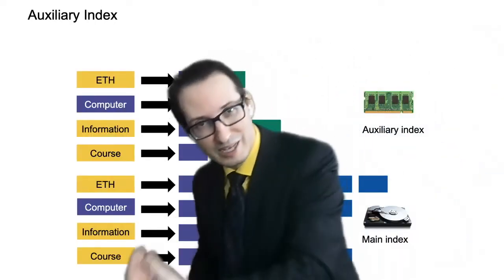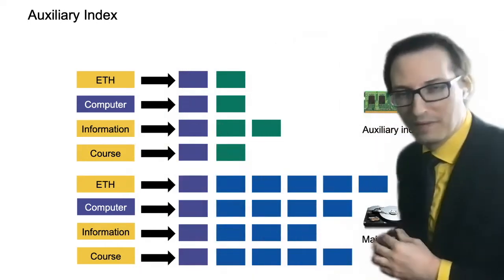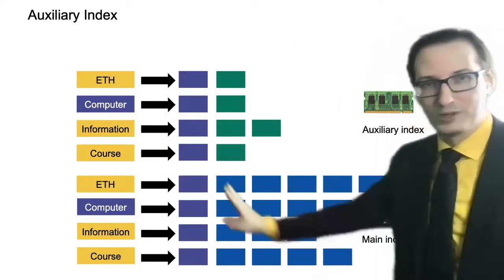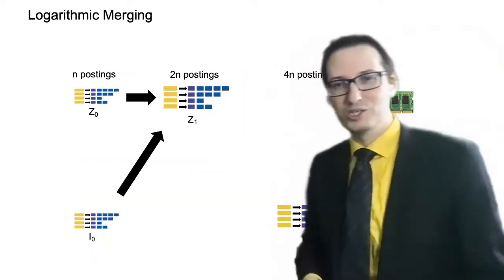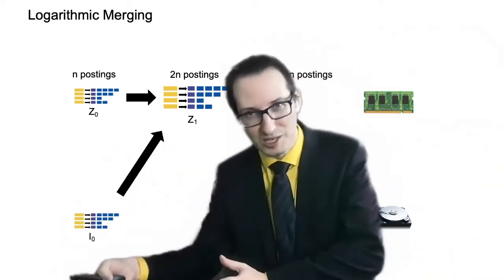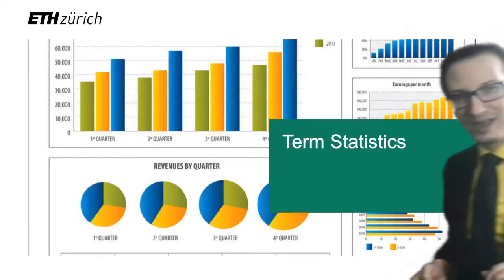Then we looked into online index construction. So this is when the collection evolves dynamically and you need to keep the index up to date. So we looked into this auxiliary index in memory, and then into this logarithmic merging, which is this very efficient way of going from quadratic to T log T. That's how we improved on it. And that's pretty much it.